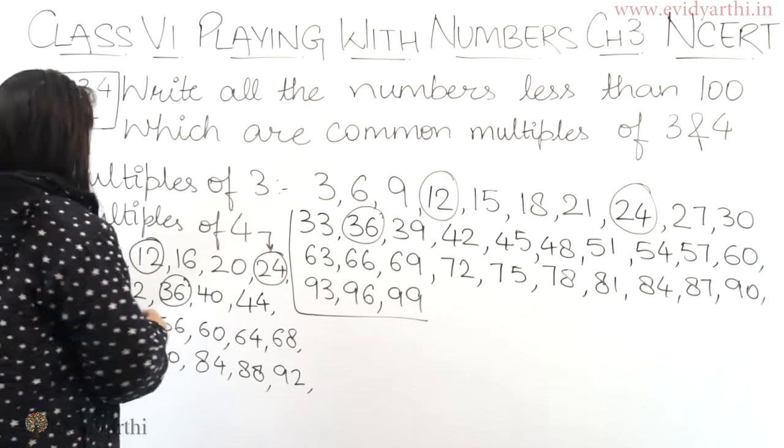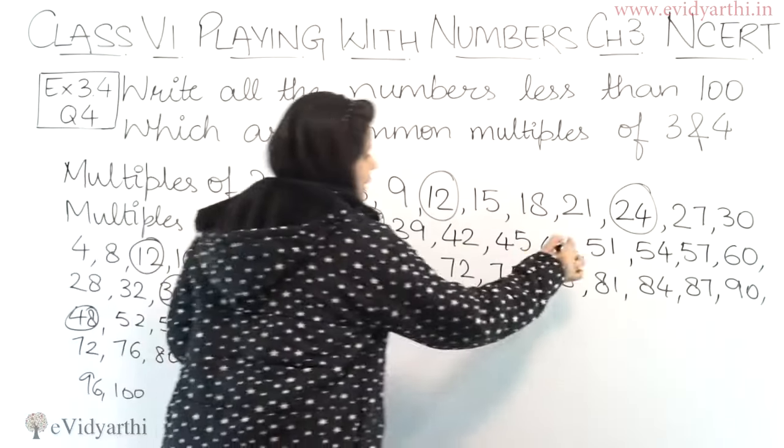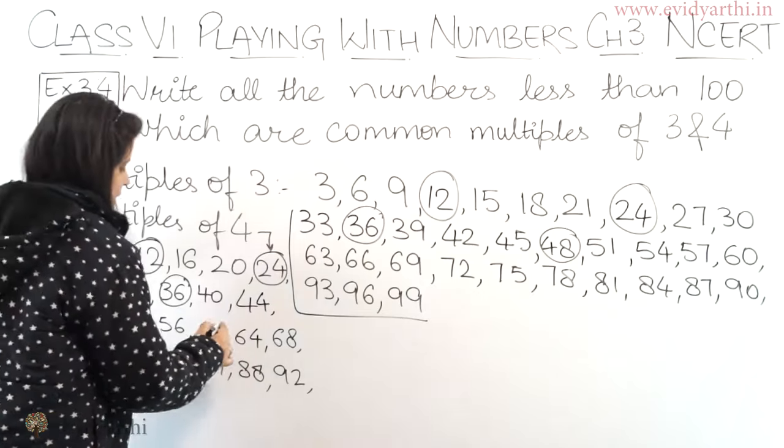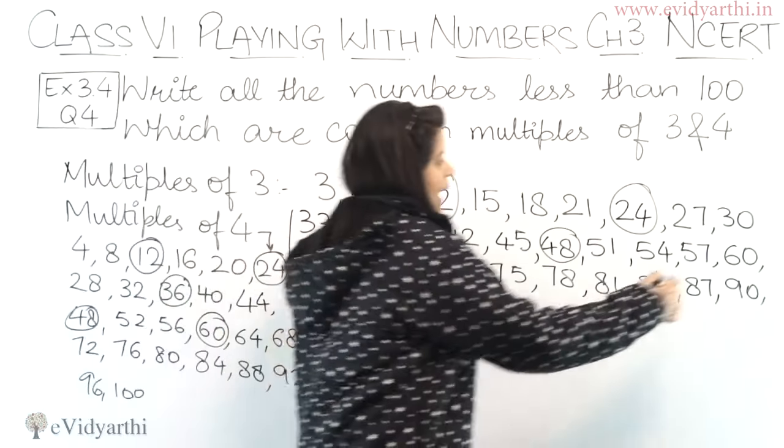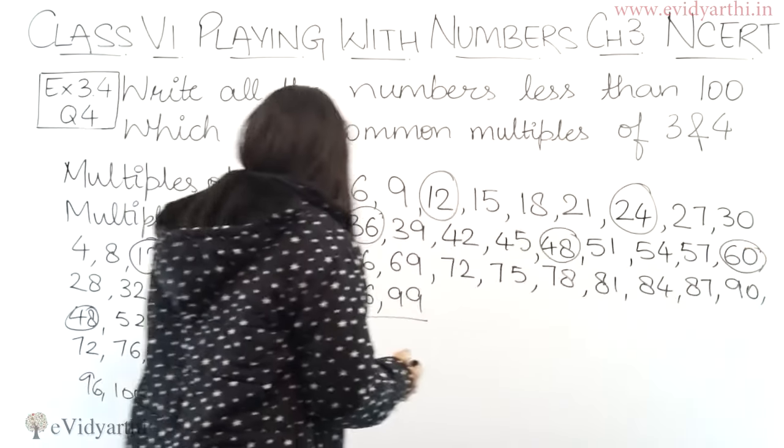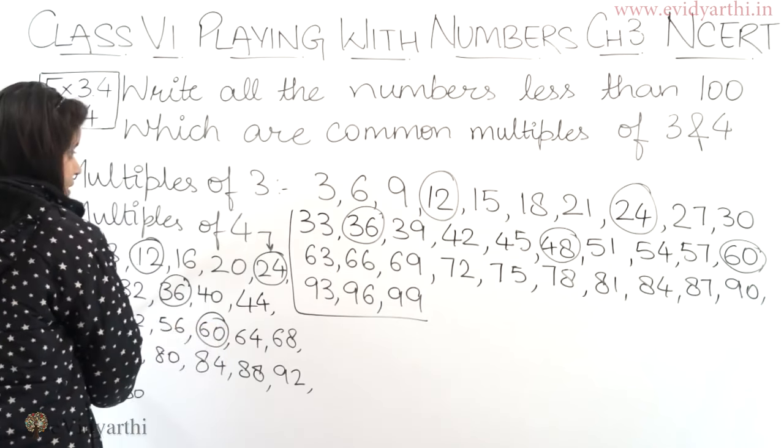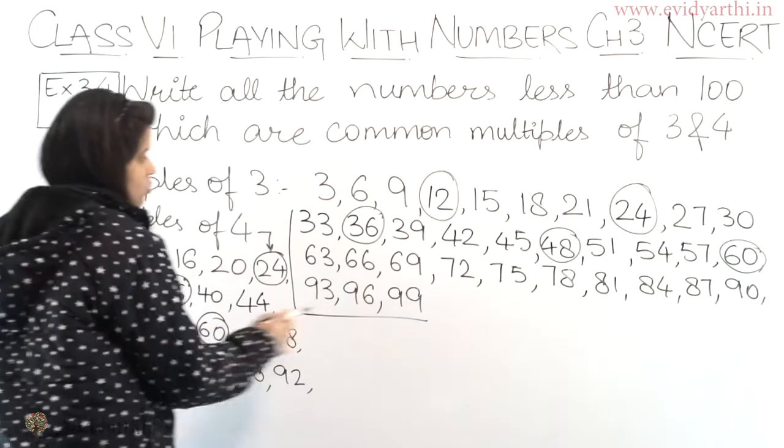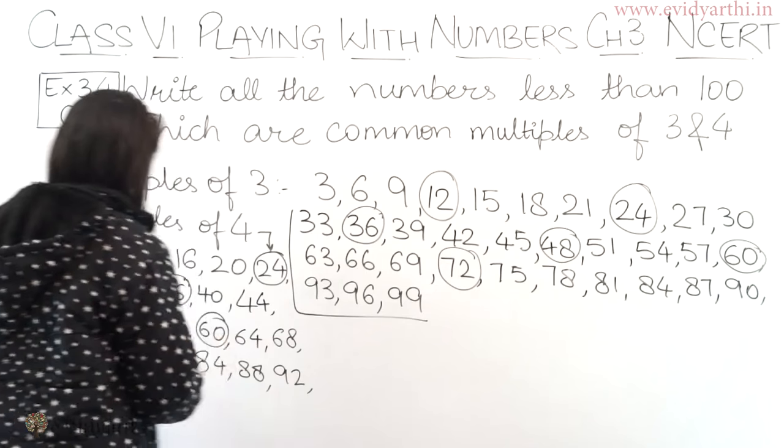Then we have 48. So 48 is again in both. After that I have 60, which is here also and here also. So after that we have 72. So 72 is again here also and here also.